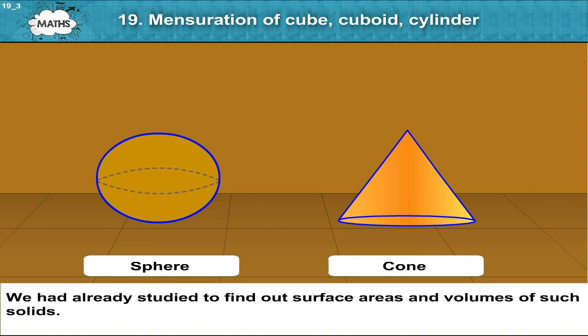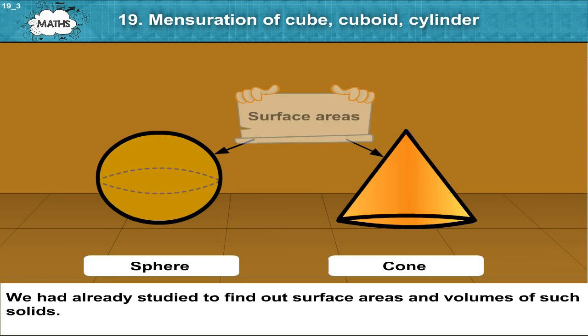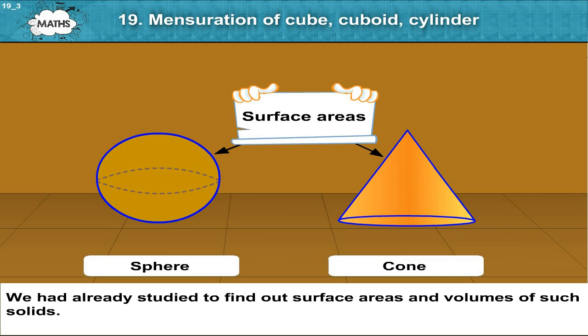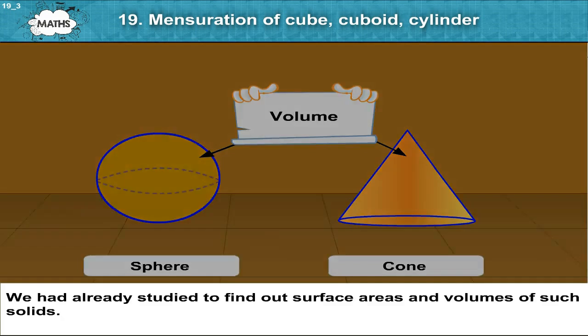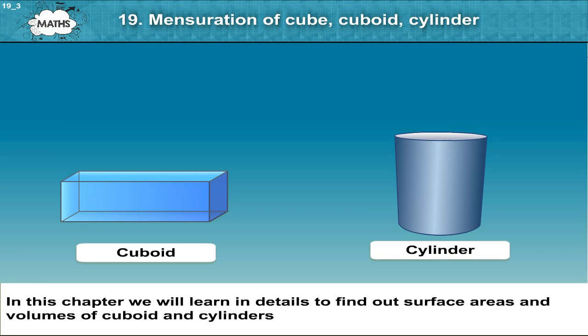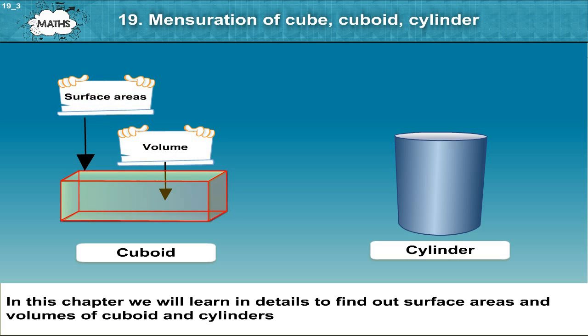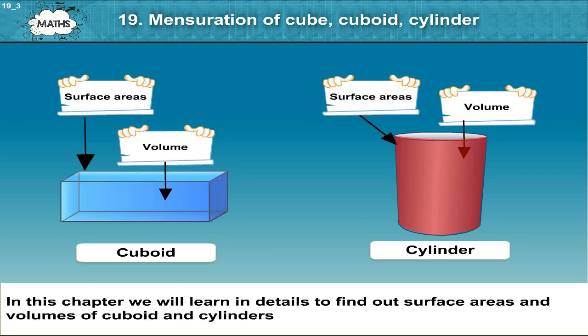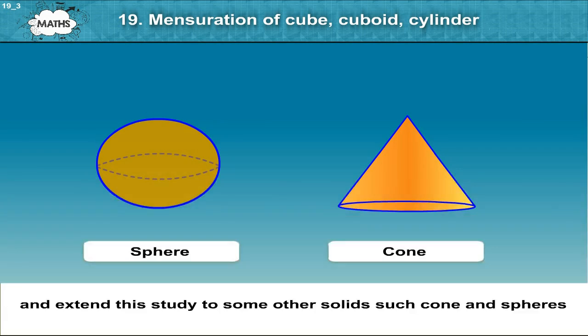We had already studied to find out surface areas and volumes of such solids. In this chapter, we will learn in detail to find out surface areas and volumes of cuboids and cylinders and extend this study to some other solids such as cones and spheres.